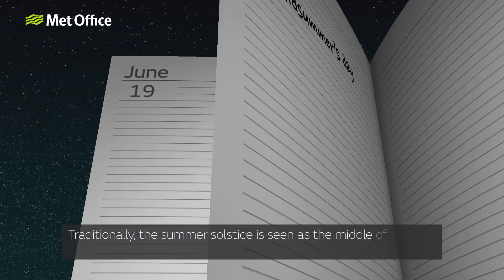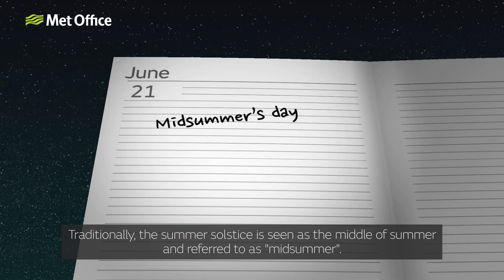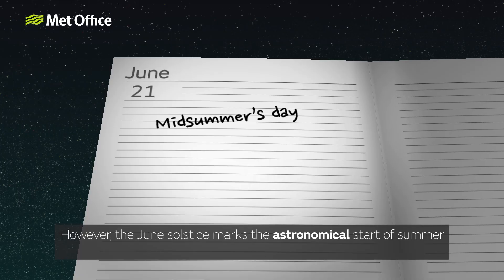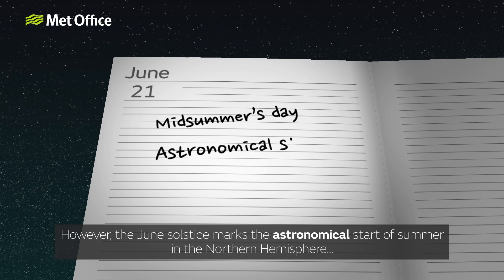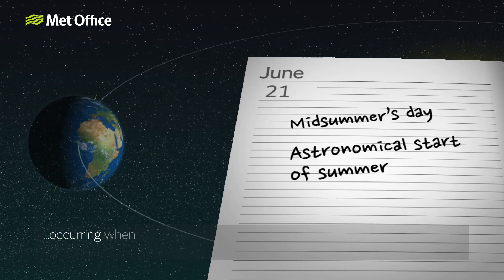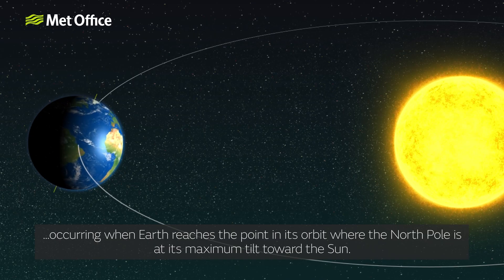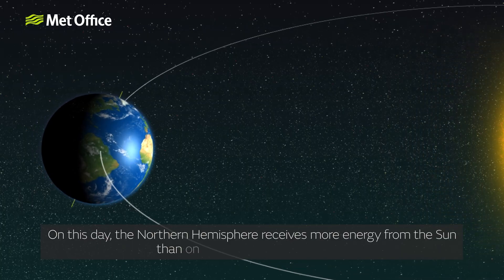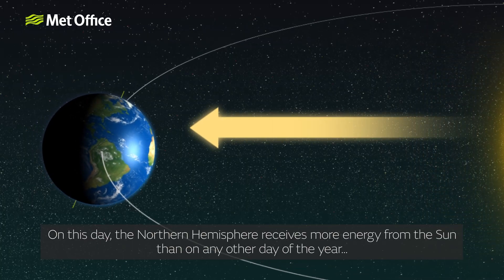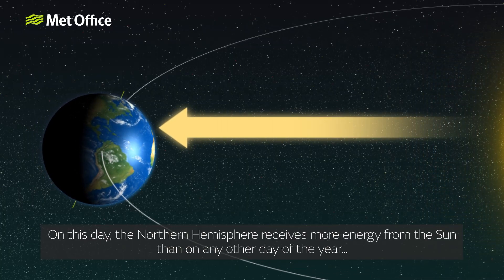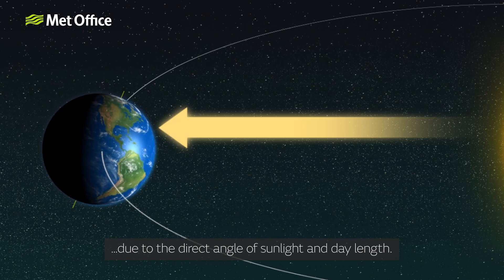Traditionally the summer solstice is seen as the middle of summer and referred to as midsummer. However, the June solstice marks the astronomical start of summer in the northern hemisphere, occurring when the Earth reaches the point in its orbit when the North Pole is at its maximum tilt toward the Sun. On this day, the northern hemisphere receives more energy from the Sun than on any other day of the year, due to the direct angle of sunlight and day length.